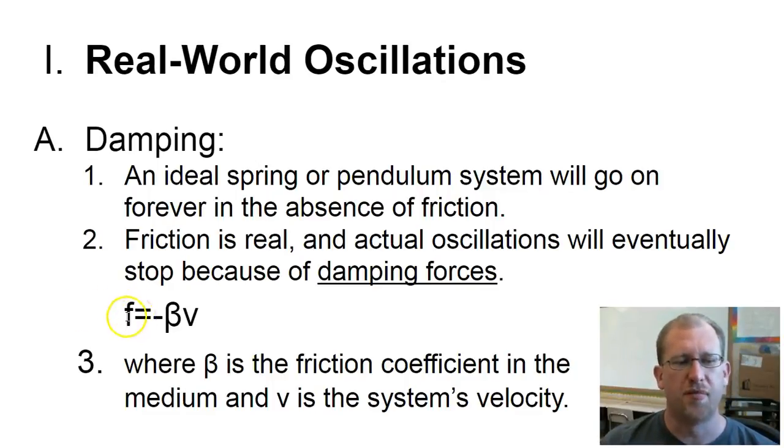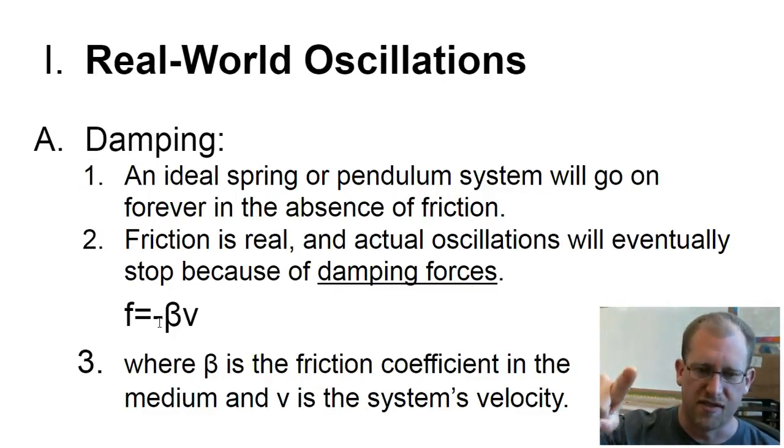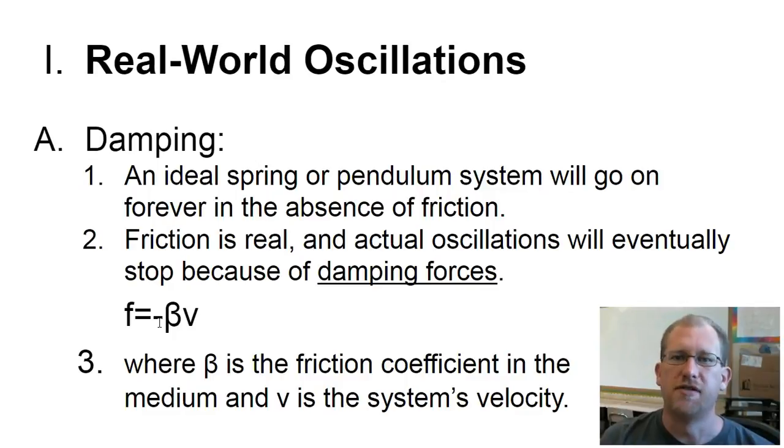And the equation there is that the force of damping is equal to negative beta. And beta is the friction coefficient in the medium. Times the velocity of the oscillation. So, the faster it's oscillating, the greater the friction force on it. And the greater that the force is trying to work to slow it down. So, it looks very much like the regular equation for friction. The F equals mu n. But instead of mu, we use beta. And beta just lets us know that the friction force we're talking about is an oscillation in a medium.